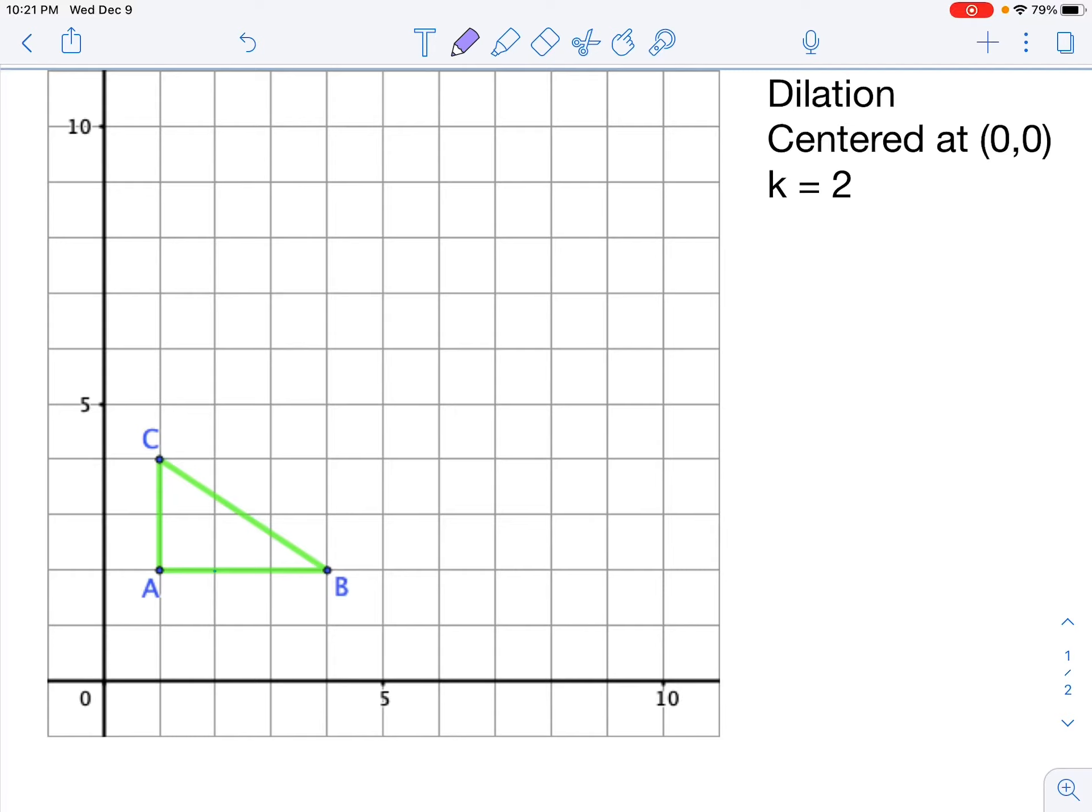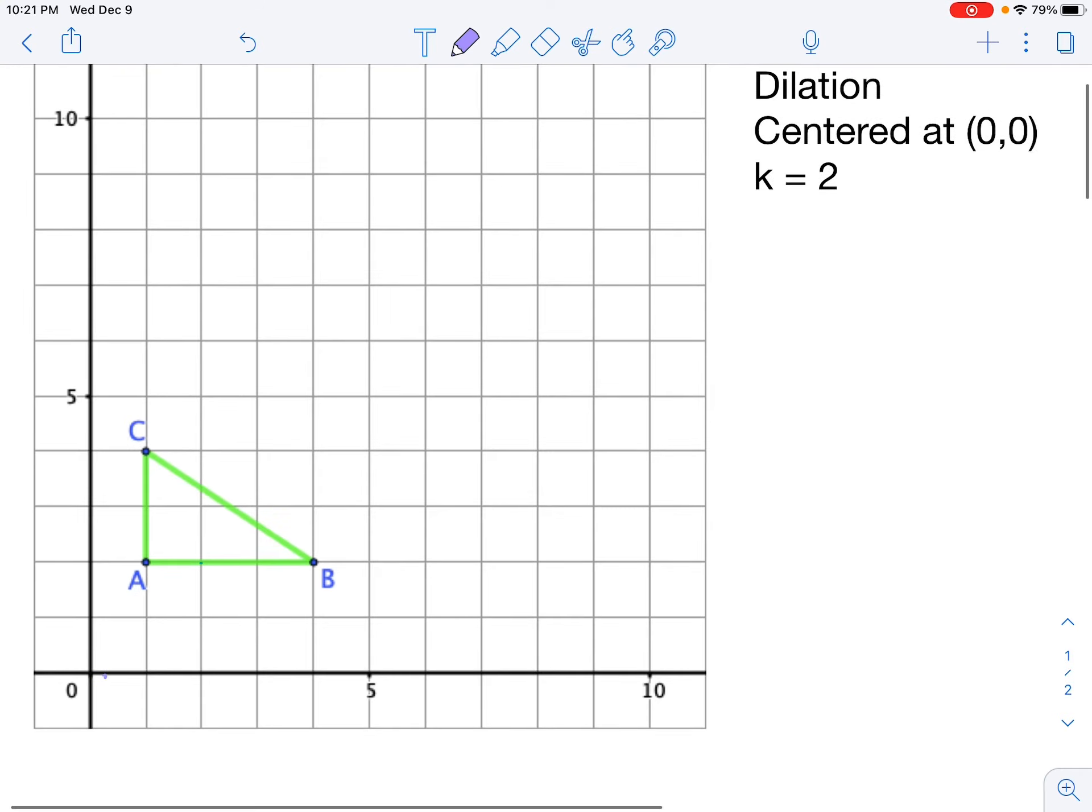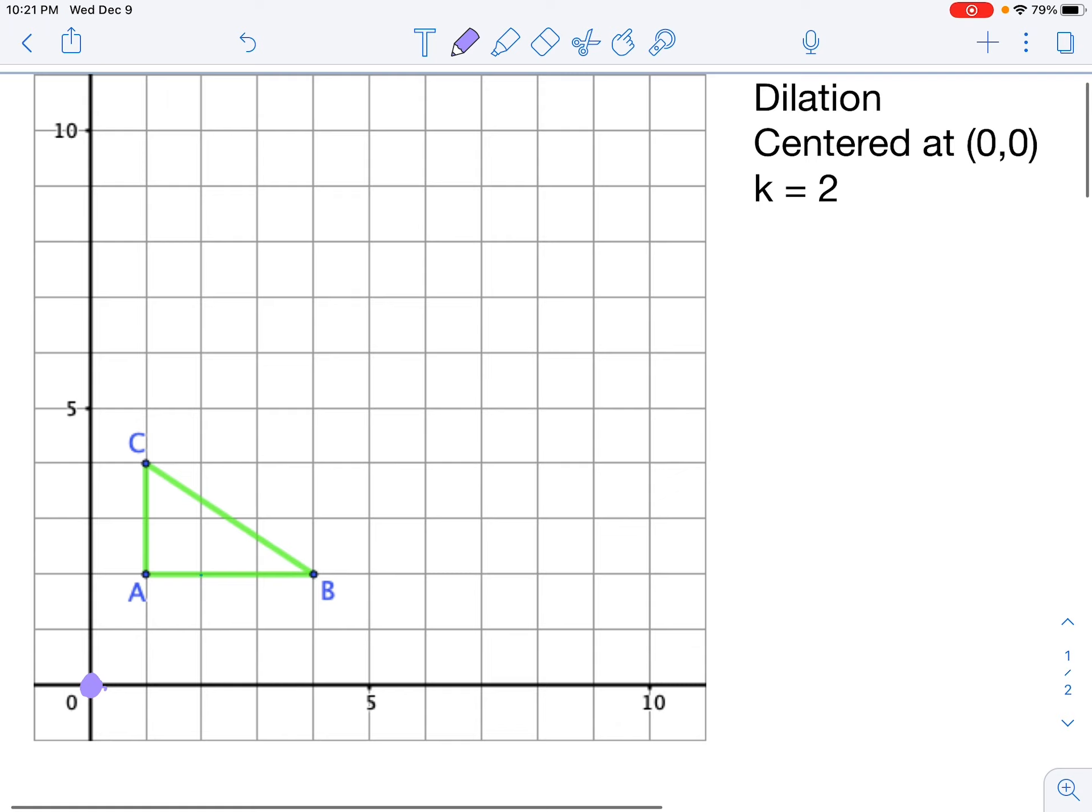Okay, we're going to do an example of a dilation here, and then you'll have some practice to do later in the Desmos activity. We're doing a dilation centered at (0,0). I'm going to start by drawing the center of dilation right here. That's where I'm always going to go back to when I start counting to create my new points. The scale factor is 2.